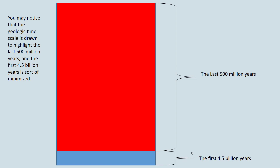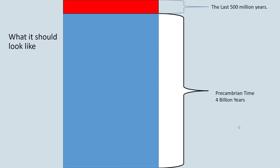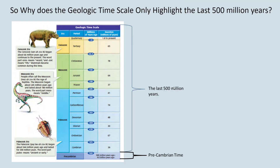In reality, if we were truly showing what geologic time looked like, this would be the last four billion years and this small section would be the last 500 million years. So why do we focus on the 500 million instead of that larger span? We minimize the first four billion years and maximize this last 500 million — why is that?